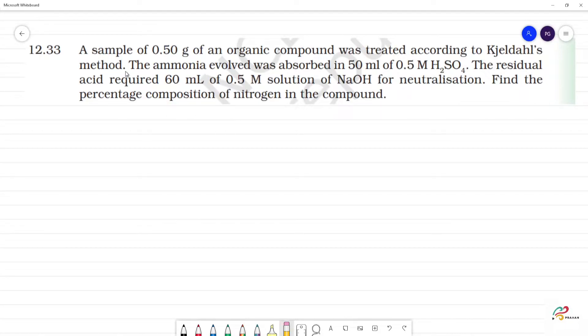A sample of 0.5 gram of an organic compound was treated according to Kjeldahl's method. Kjeldahl's method is for percentage of nitrogen. If you calculate it, percentage of nitrogen is equal to 1.4 into normality of acid into volume of ammonia NH3 divided by W. What is W? W is equal to sample, that is 0.5 gram of organic compound.